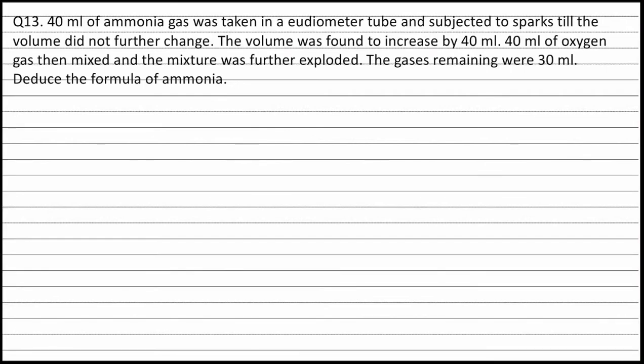Question 13. 40 ml of ammonia gas was taken in a eudiometer tube and subjected to sparks till the volume did not further change. The volume was found to increase by 40 ml. 40 ml of oxygen gas was then mixed and the mixture was further exploded. The gases remaining were 30 ml. Deduce the formula of ammonia.